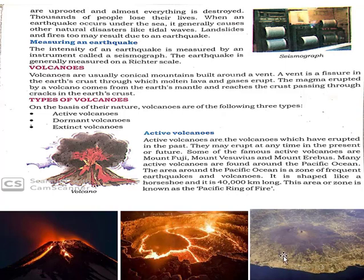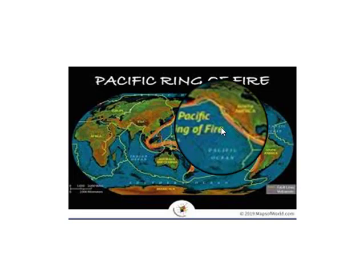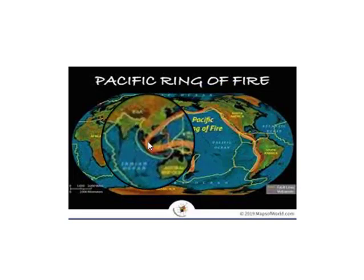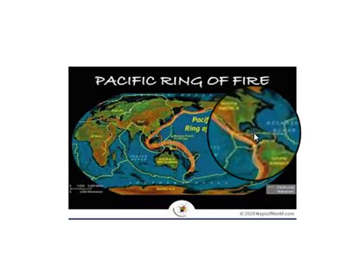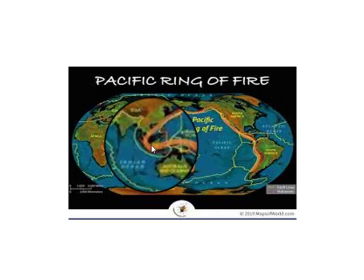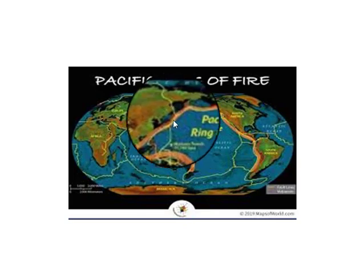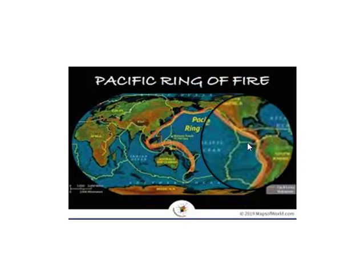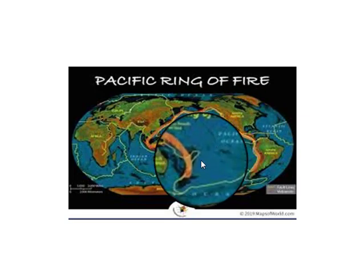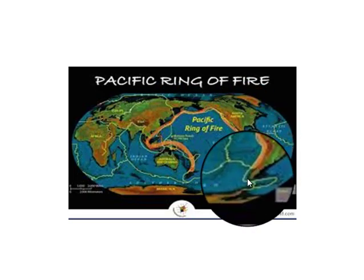Here are pictures of some volcanoes, and here is our Pacific Ocean. Around it, you can see a ring — this is called the Pacific Ring of Fire. In this zone, so many volcanoes are present and this is the place where earthquakes occur frequently. The Pacific Ring of Fire is around 40,000 kilometers long and shaped like a horseshoe. This is the end of today's class. In our next class, we shall discuss about dormant volcanoes, extinct volcanoes, and tidal waves.